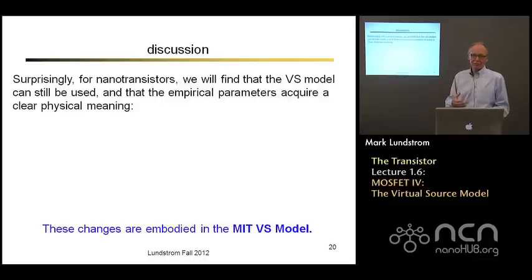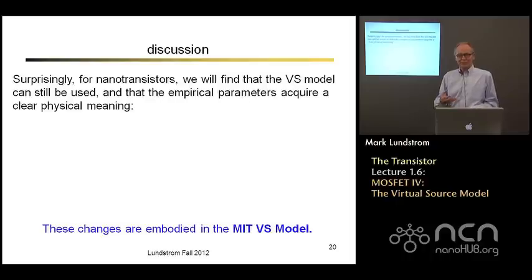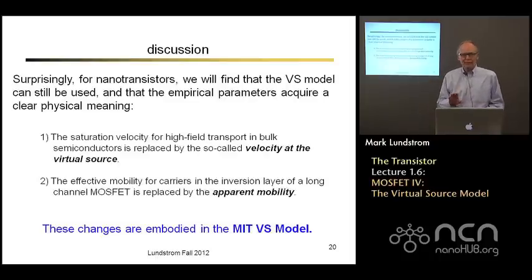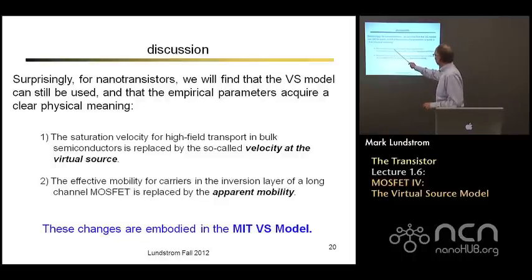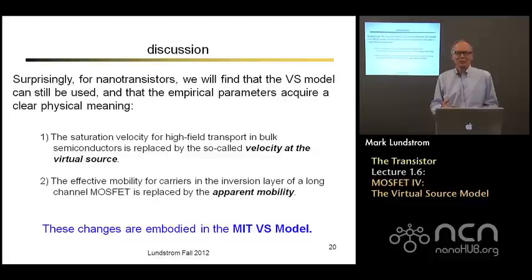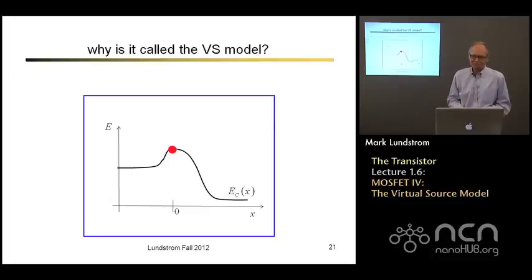There's a very simple reason the transistor is a barrier control device, and that was built into the first model. It's just that the magnitude of the currents need to be adjusted a little bit because of the breakdown in some of the physical concepts. What we're going to find is that these parameters acquire a very clear physical meaning — that's what the course is all about. The saturation velocity is replaced by something we'll call the injection velocity, and the actual mobility of carriers in the inversion layer is replaced by something we call the apparent mobility, which has a very clear physical interpretation.